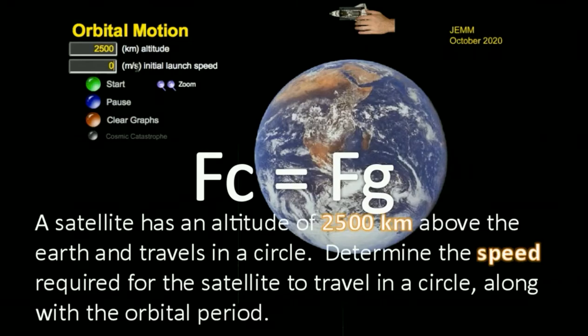And finally, we'll use that equation to determine the speed required for a satellite to travel in a circular orbit when it's at a specific altitude of 2,500 kilometers. So let's commence operations.